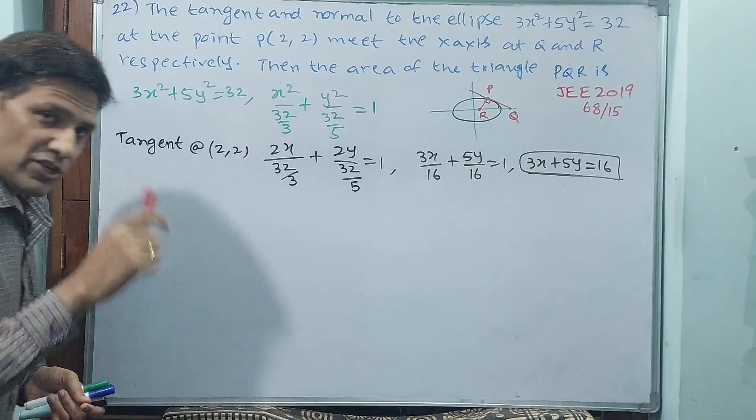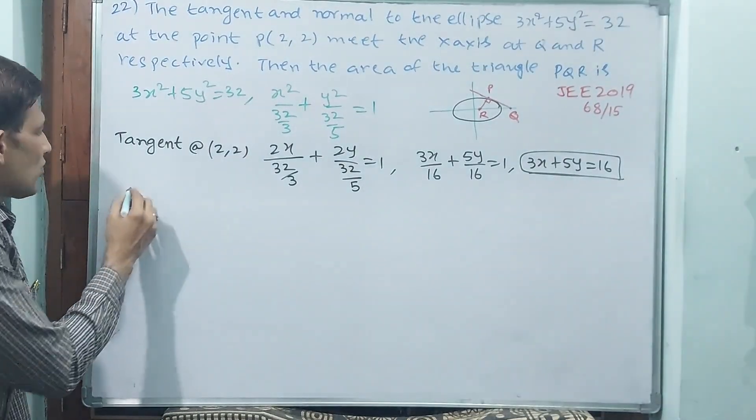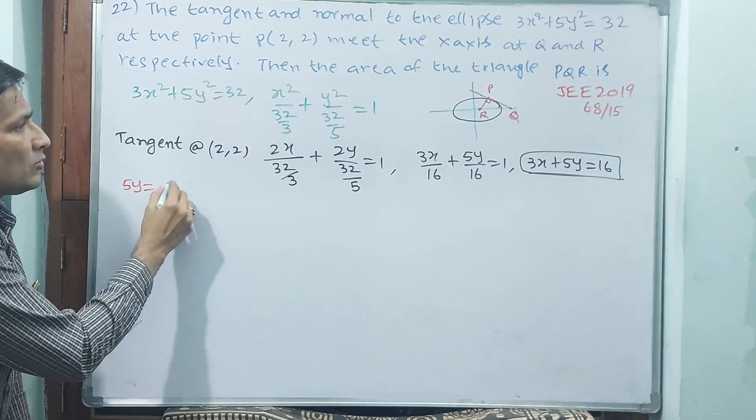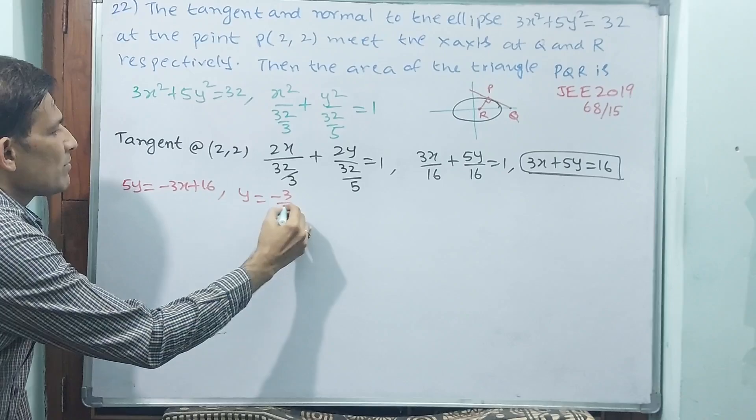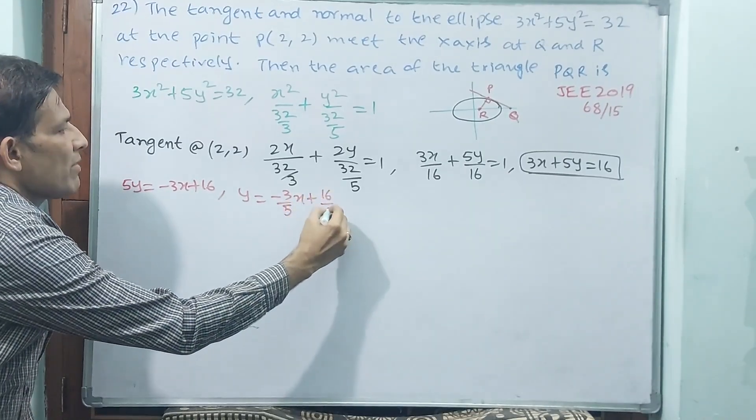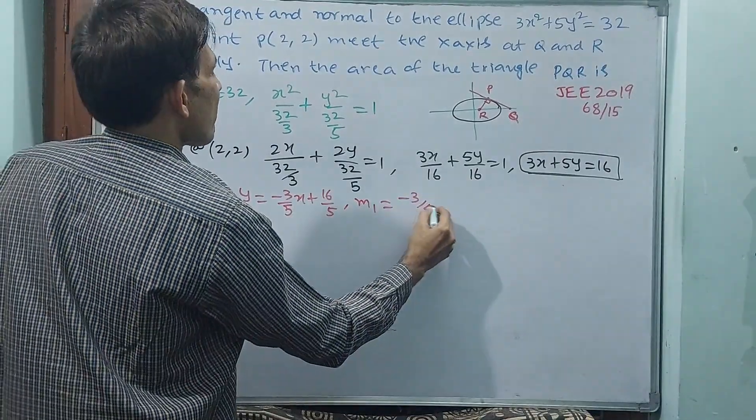Tangent equation required and slope also required for finding the normal. Slope, how you are going to find? See 5y is equal to minus 3x plus 16, y is equal to minus 3/5 x plus 16/5. Slope of the tangent m1 is equal to minus 3/5.